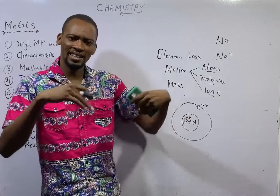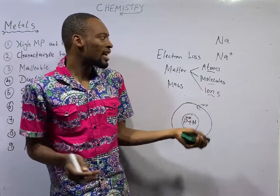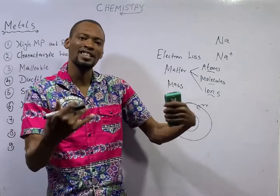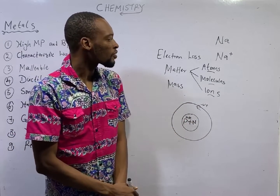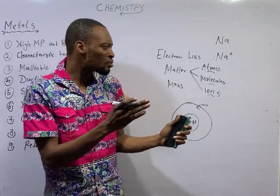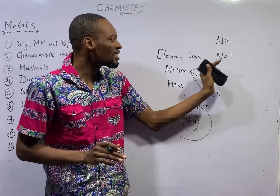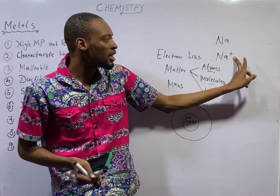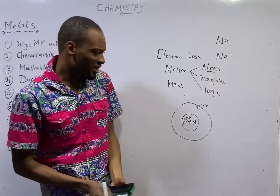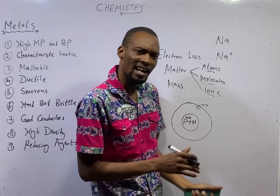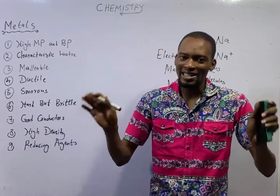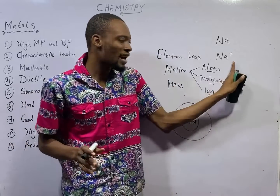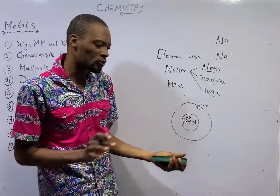All these groups can easily give out electrons, unlike group 7 which has 7 electrons in the outer shell — those elements will likely accept electrons. So group 1, 2, and 3 elements are generally metals because they give out electrons to become positively charged. We can therefore say that metals are elements that ionize by electron loss. In losing electrons, they form positive ions.